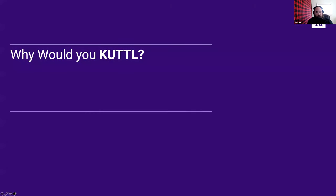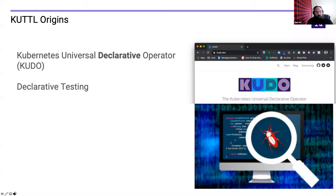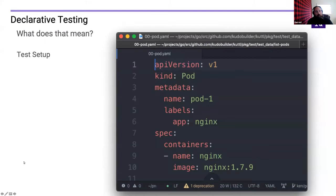Why would we even want to do this? It really comes down to the notion of building a declarative testing framework and running our tests declaratively. We talk a lot about Kubernetes and wanting to be declarative in everything we do, and we believe it should also apply to testing.